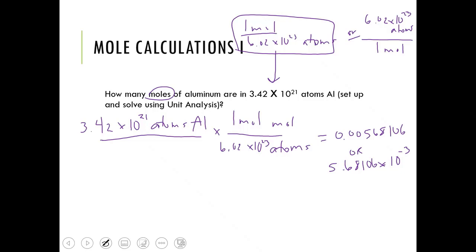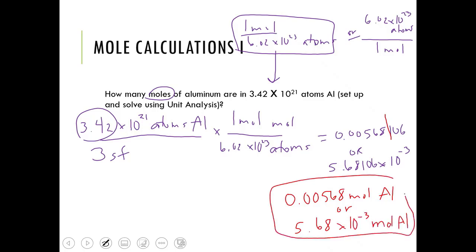The last thing we need to do is significant figures. I have 3 sig figs in my initial starting, so I need to have 3 at the end. So you can leave it as 0.00568 moles of aluminum, or we could say 5.68 times 10 to the negative 3 moles of aluminum. Either one of those is perfect. You only need one.